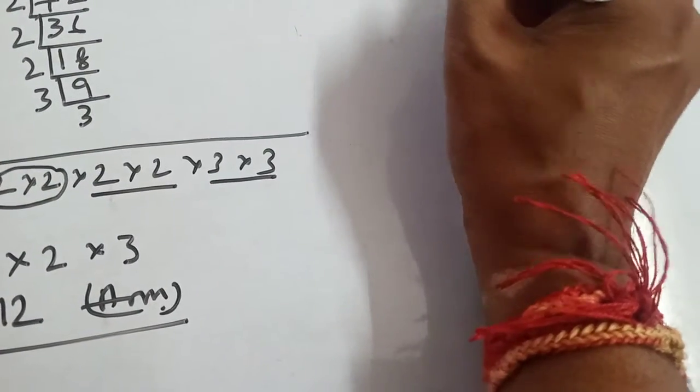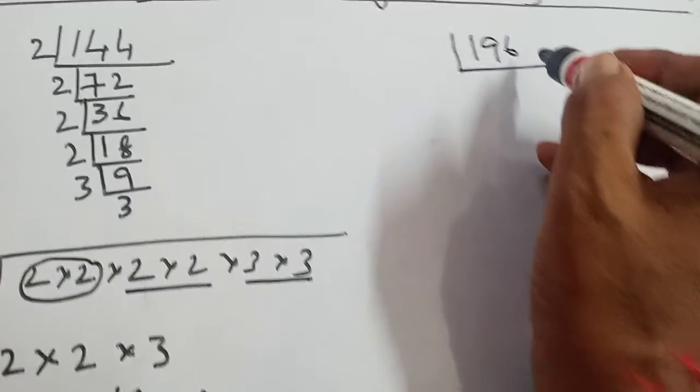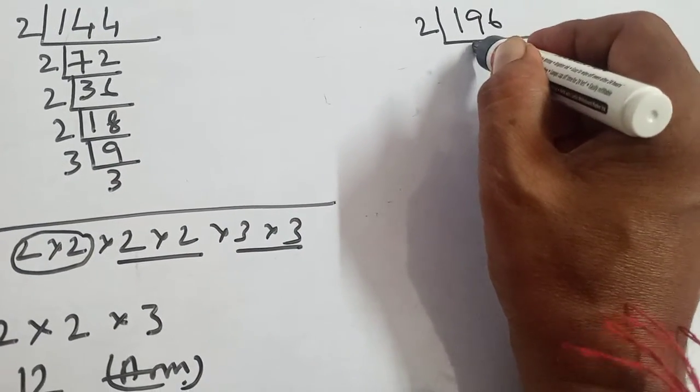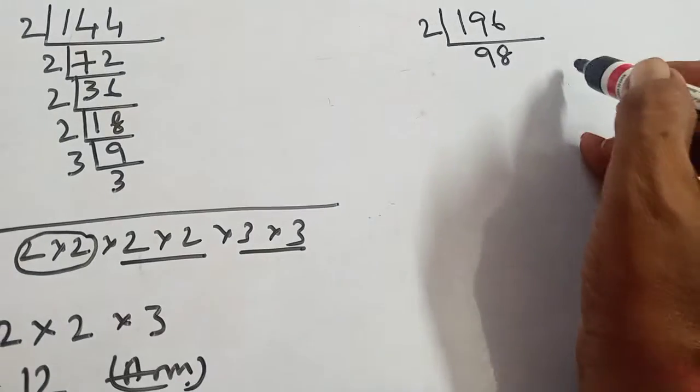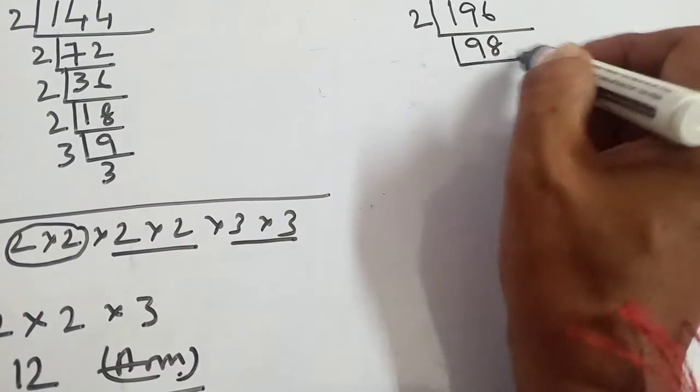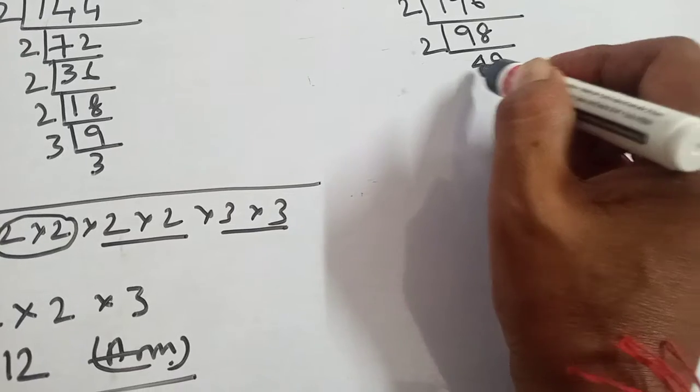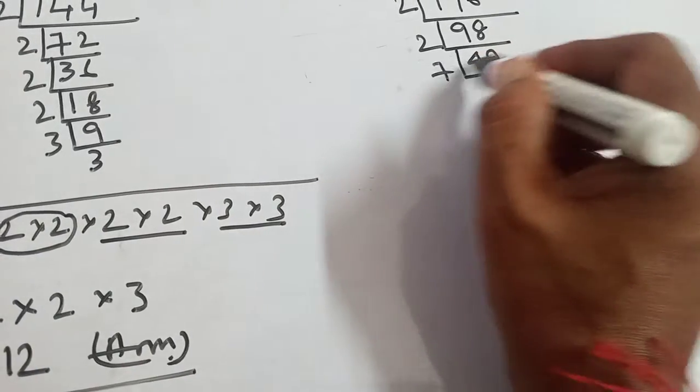Again, 196. This is also same, it is divisible by 2. Again it is divisible by 2, 49. Again divisible by 7, 7.